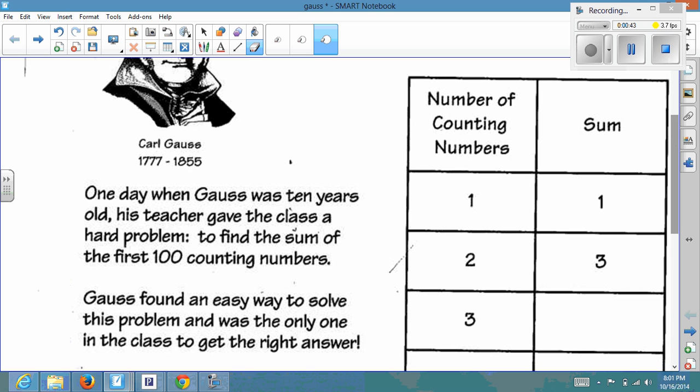The way that he did this was that he looked for patterns, because that's what math is. And so in this table here, you see that if you have the first counting number, the sum is 1. And then when you have the second counting number, it would be adding here, and then we would get 3. And then we'll add here, and we get 6.